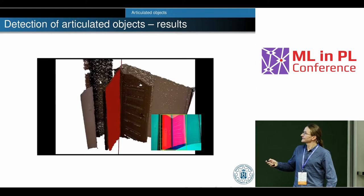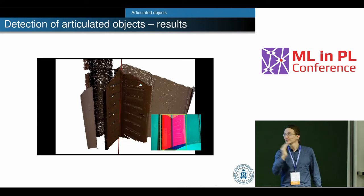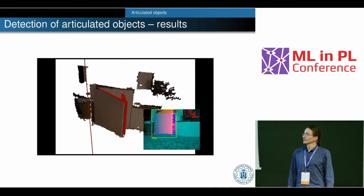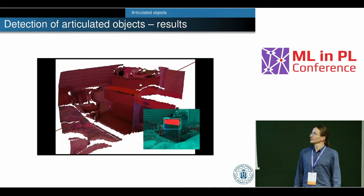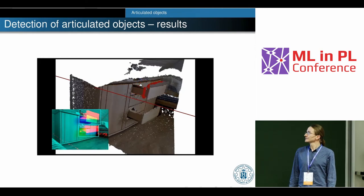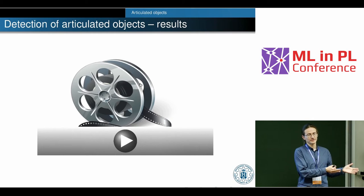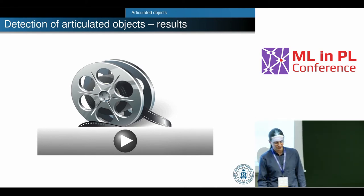Everything is visualized on the point cloud, including drawers. The neural network provides strong prior knowledge about the joint — we classify joint types, so we know whether it's a hinge joint, drawer, or something else.